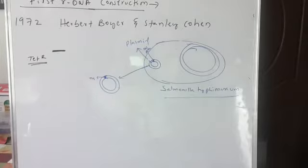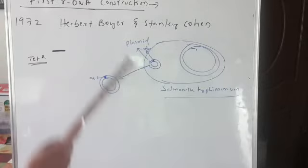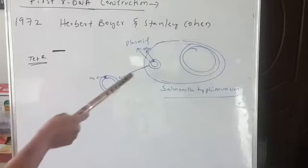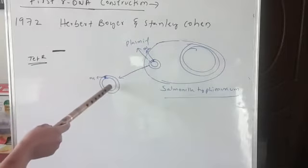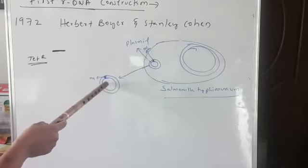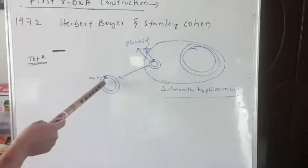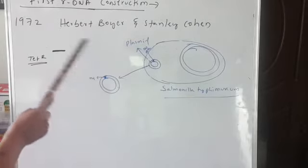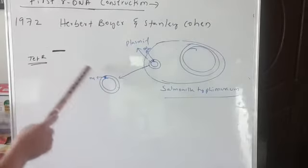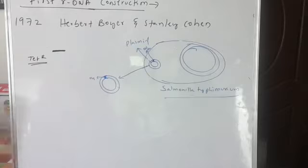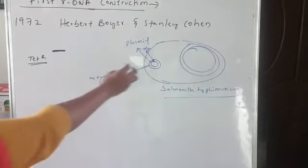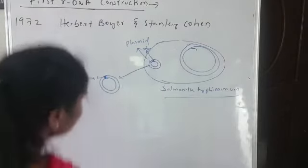We have many types of vectors. In Boyer and Cohen's experiment, the vector being used is plasmid. So they are taking the help of the plasmid for carrying the desired gene into the host. What they did is they isolated this plasmid.